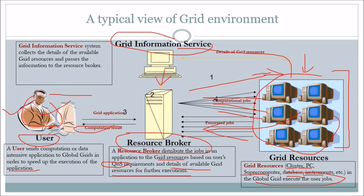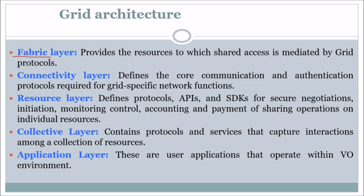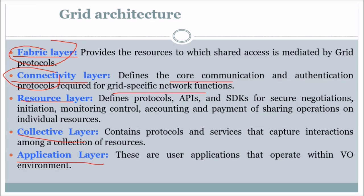This is the grid architecture. There is a fabric layer, connectivity layer, resource layer, collective layer, and application layer. The fabric layer provides the resources to which shared access is mediated by the grid protocols. The connectivity layer defines the core communication and authentication protocols required for grid-specific network functions. The resource layer defines the protocols, APIs, and SDKs for secure negotiations, initiation, monitoring, control, accounting, and payment of sharing operations on individual resources.